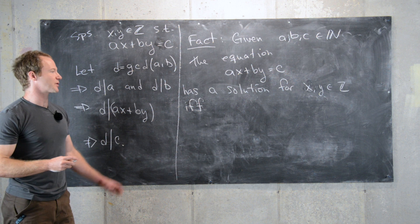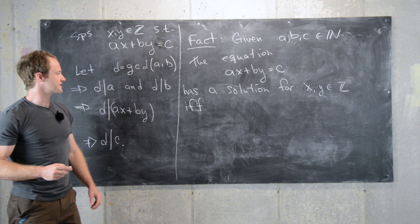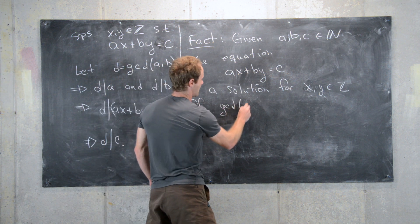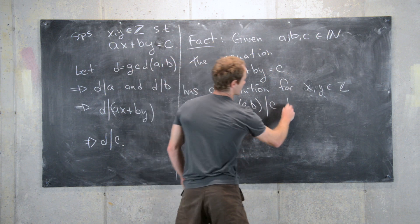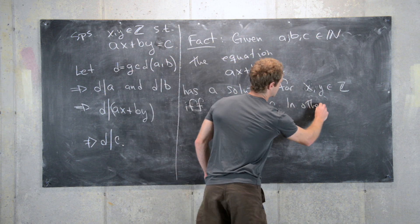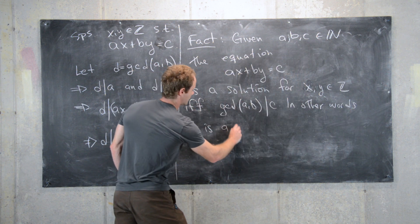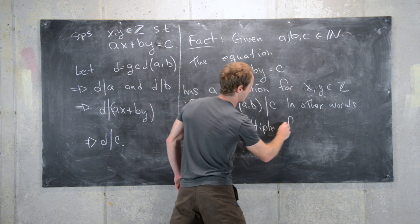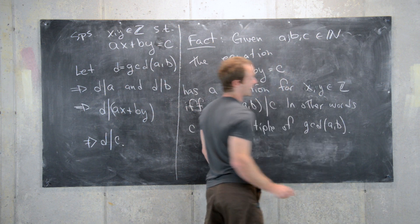although we haven't proven this super carefully but we've given a lot of evidence to suggest this, if and only if the gcd of a and b divides c. In other words, c is a multiple of the gcd of a and b.